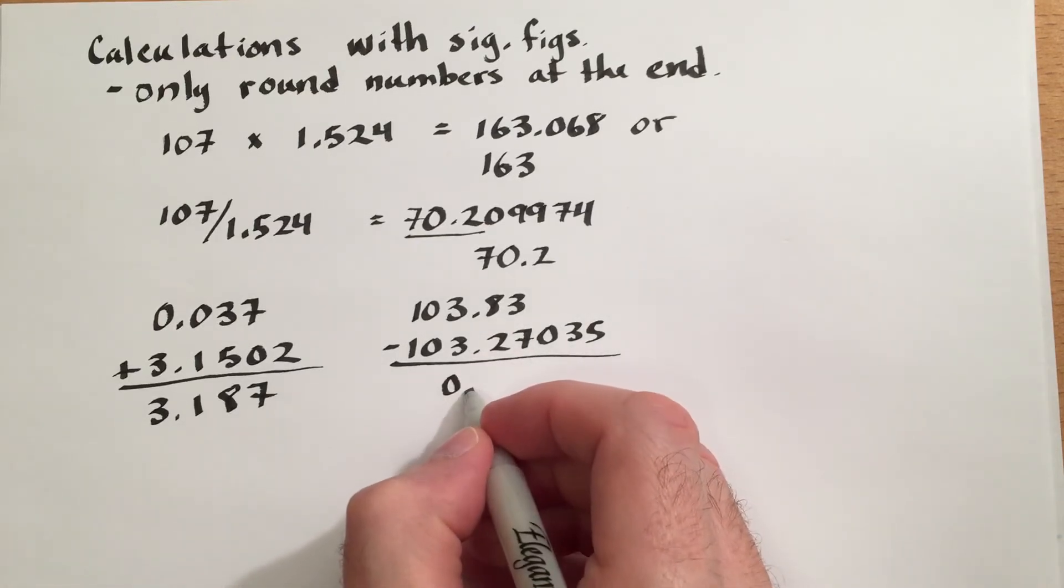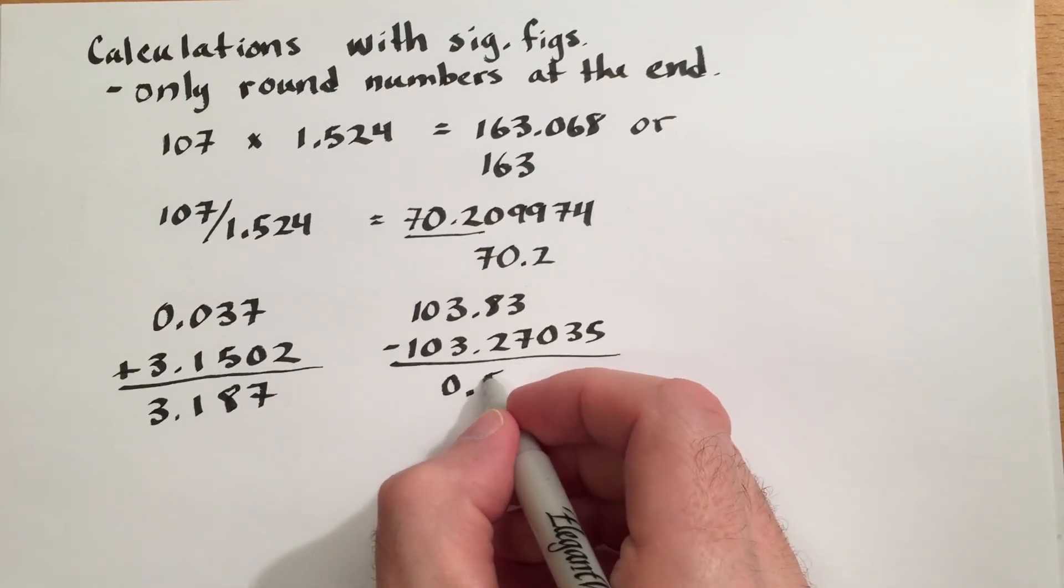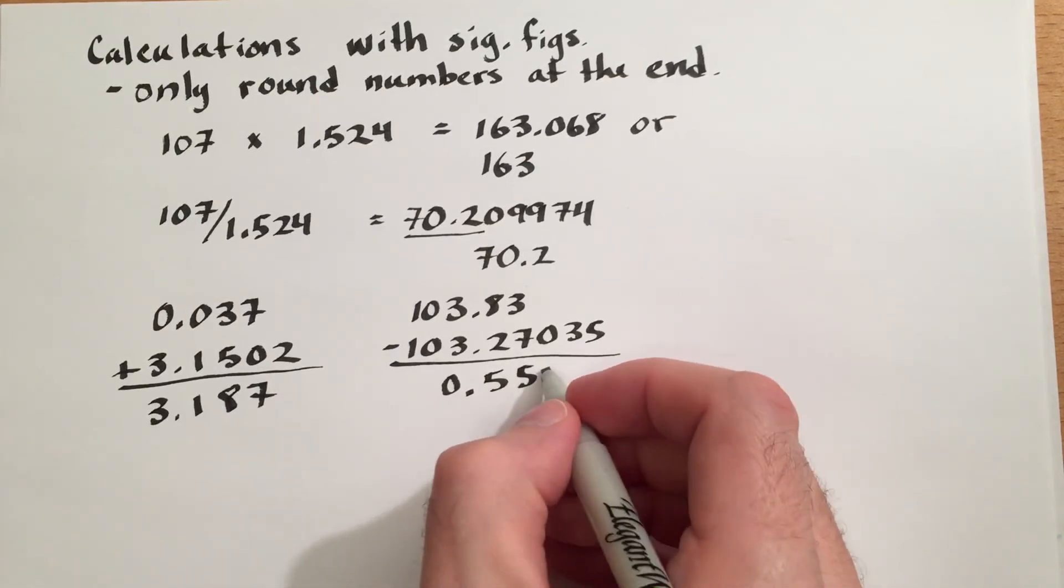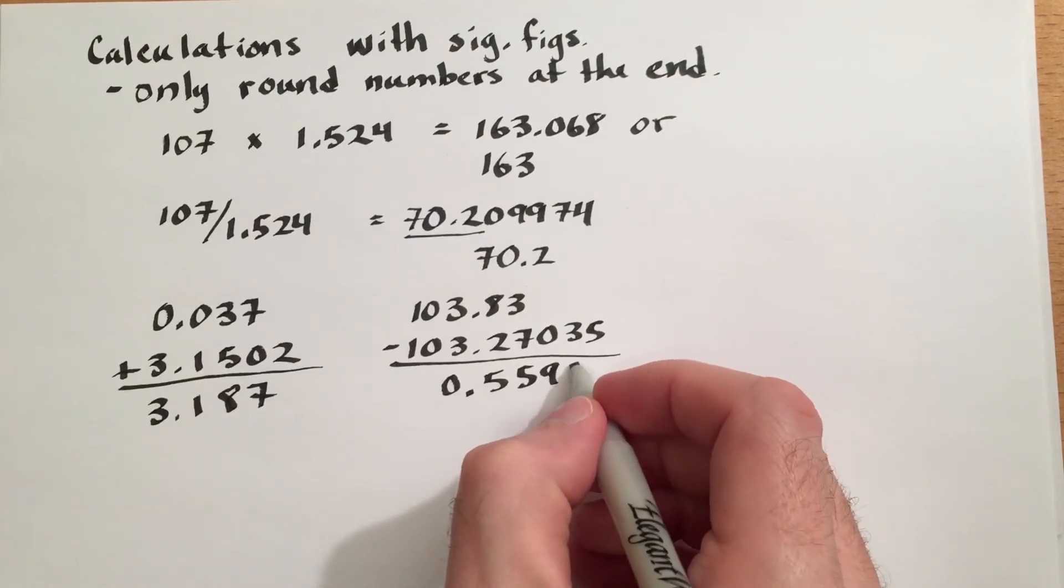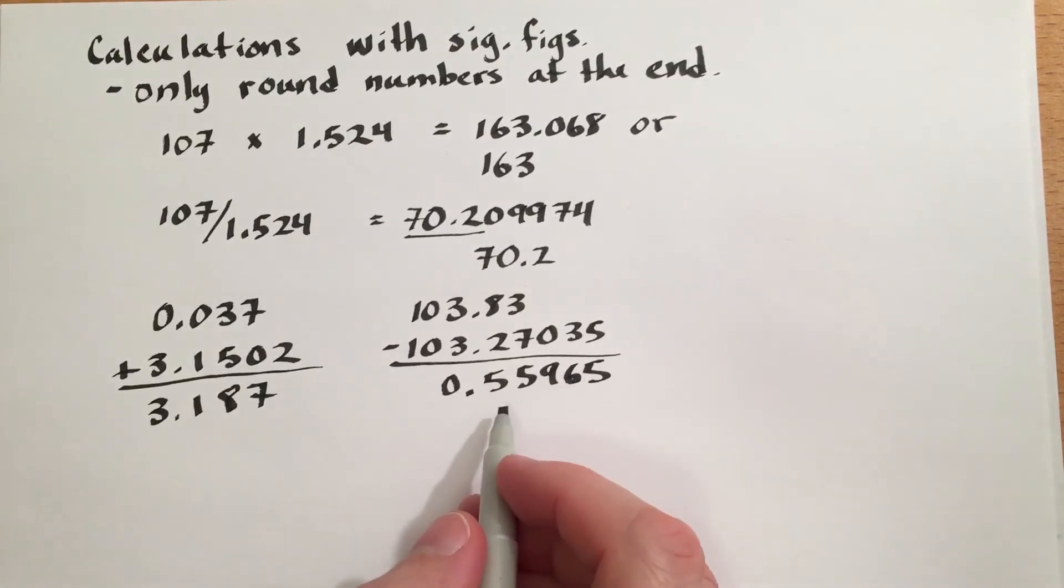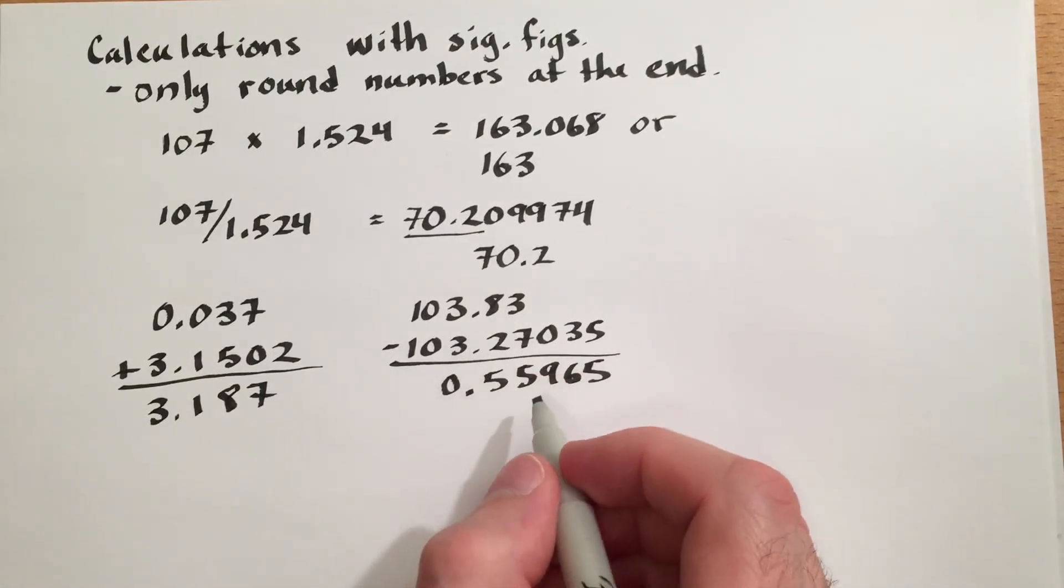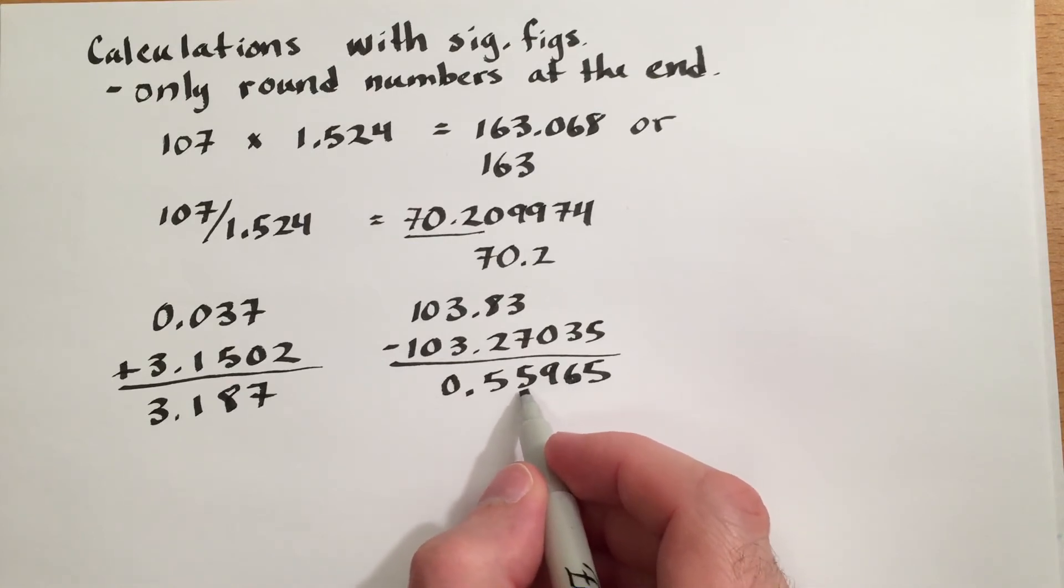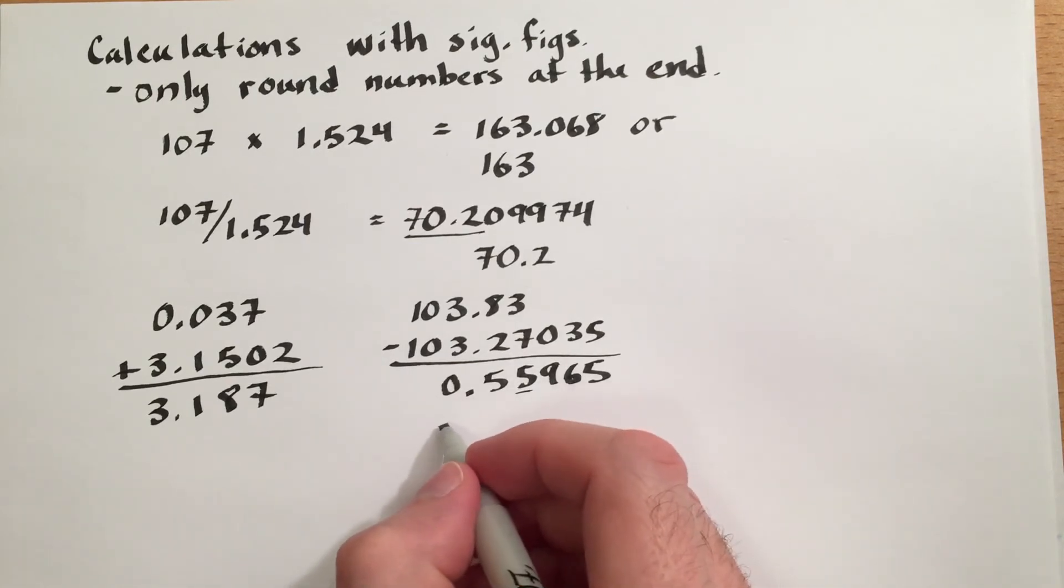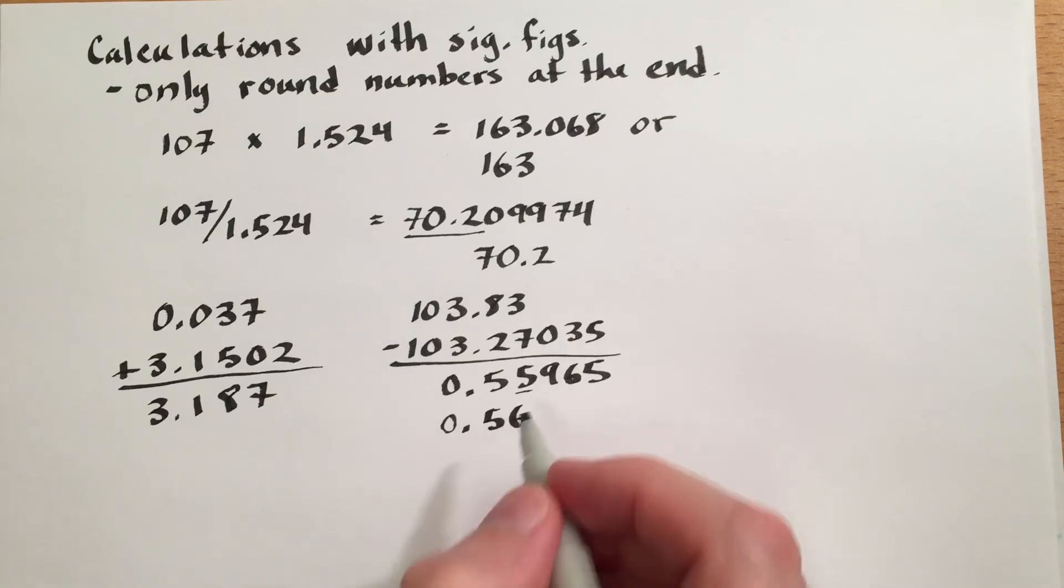So 0.55965 is what we would get if we do this subtraction. And we should round this number to 2 decimal places, or 0.56.